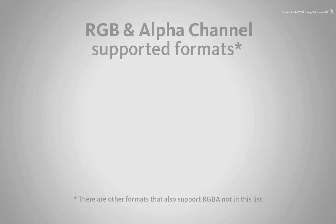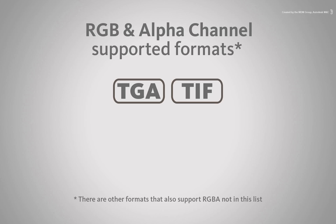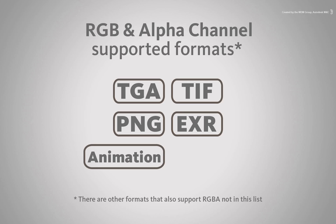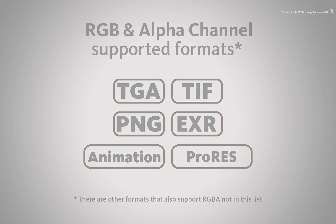Image files such as Targa, TIFFs, PNG and OpenEXR, as well as movie file formats such as Animation QuickTime and Apple ProRes, are a few of the formats that can support the alpha channel alongside the RGB colour channel.